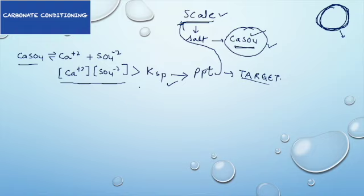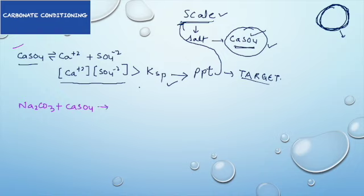To prevent this situation, we add sodium carbonate to the boiler water. The boiler water has calcium sulfate in the dissolved state — so far no problem. The moment sodium carbonate is added, it reacts to form calcium carbonate and sodium sulfate.